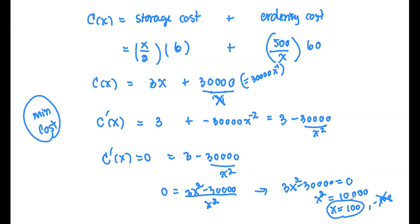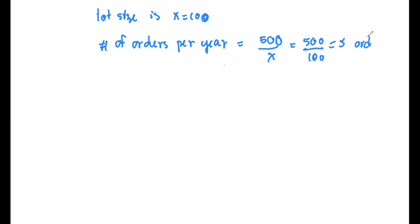Keep x equals 100. It means the lot size is x equals 100 to minimize the inventory cost. The question asks for how many times per year. So the number of orders per year would be the total in one year, which is 500 desks, divided by x, which is 500 divided by 100, or 5. So the total of 5 orders per year with the lot size of 100.